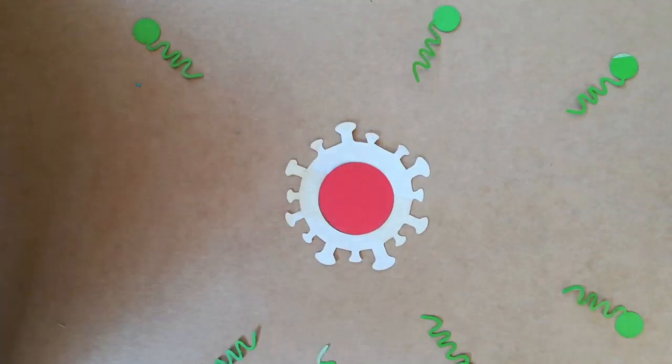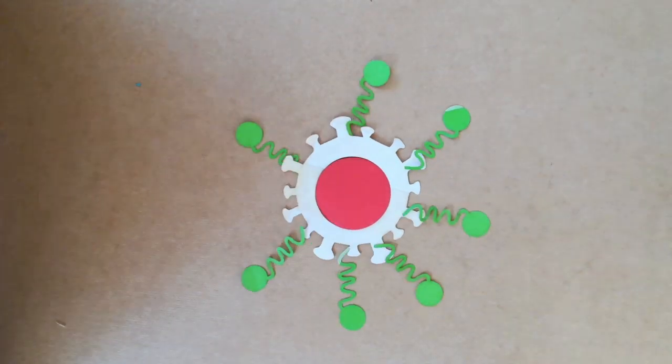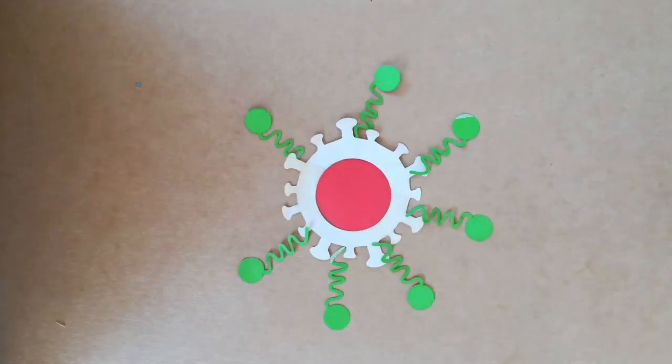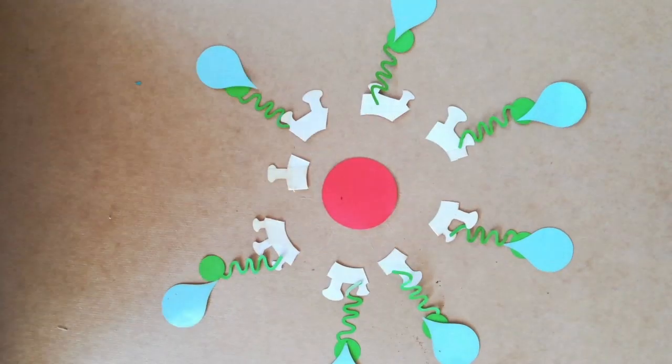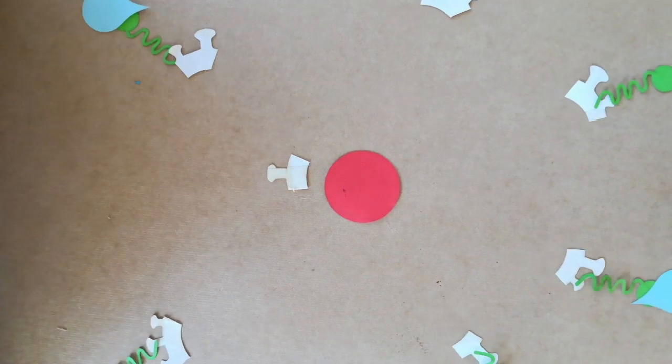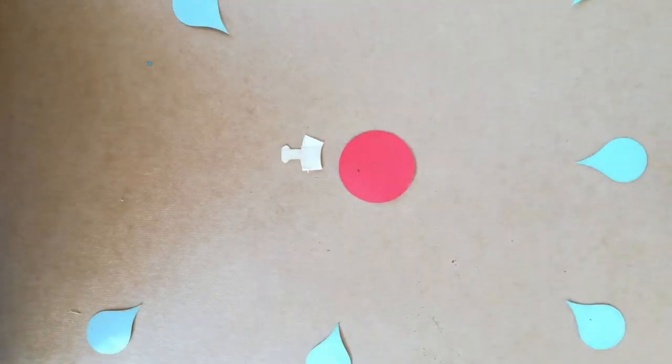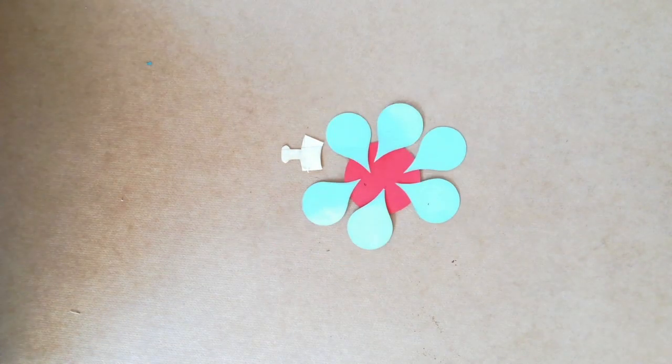As the cover of corona exists out of fats, the tail of the soap will bind to the fat. The heads of the soap will bind to the water that we use when we're washing our hands. The water pulls the soap and the cover of the virus breaks. The inside of the virus dissolves and washes away with the water.